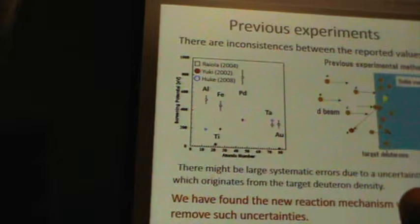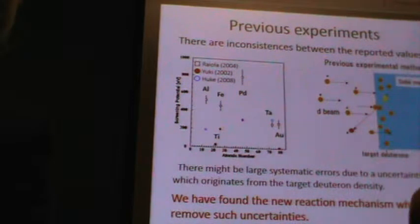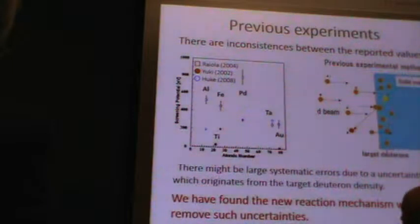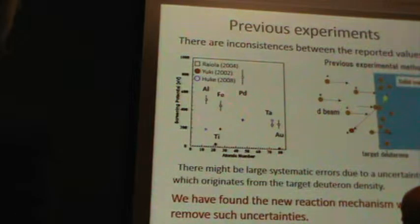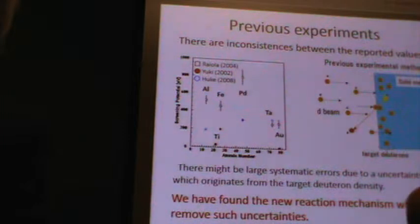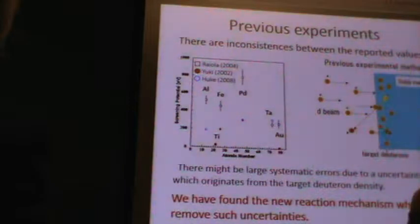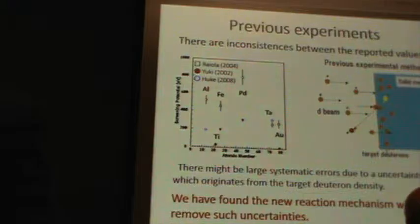Unlike experimental groups also reported large screening potentials. However, there is inconsistency between the reported values. This figure shows a part of the reported screening potentials. For example, aluminum, iron, palladium, and gold. The reported values for these metals greatly differ, exceeding the error. It's pointed out that there should be experiment-specific errors.